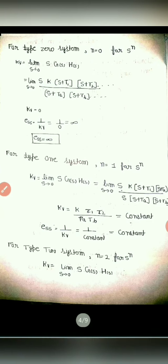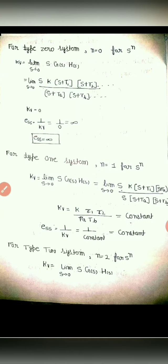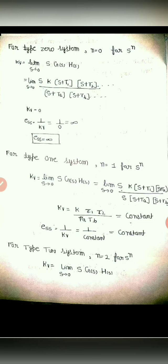Since KV equals 0, the value of ESS equals 1 over KV, which is 1 over 0, equal to infinity. So for a type 0 system, if we have unit ramp signal as input, the value of ESS equals infinity.